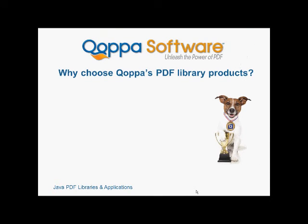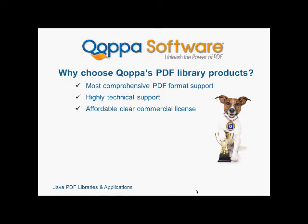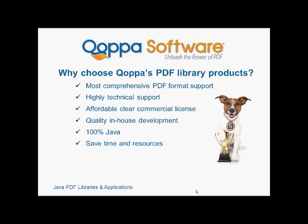Why choose Copa's PDF library products? Our products provide the most comprehensive support of the PDF format, including all types of fonts, images, and sophisticated rendering features, as well as all the advanced PDF capabilities mentioned previously. Our development team provides highly technical support and real answers fast to any questions you have. You will have no surprises when it comes time to license — we offer a clear and affordable license. Our technology is developed in-house by our team of full-time developers, and we have strict quality control. Our products are 100% Java, so you will not have issues with stability or portability. With our products, you will be able to integrate PDF functionality quickly, saving time and resources.